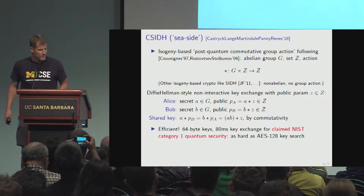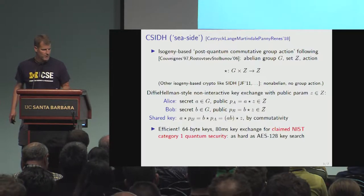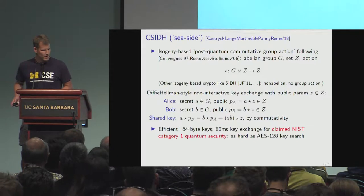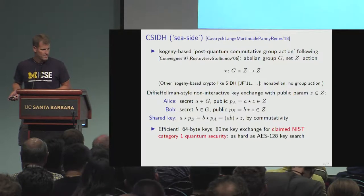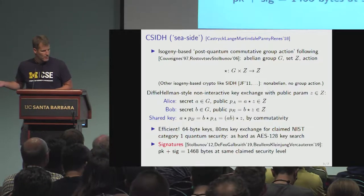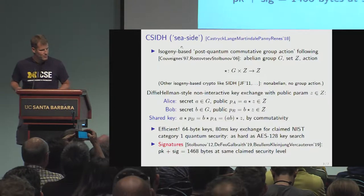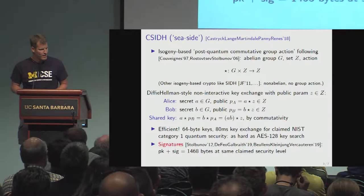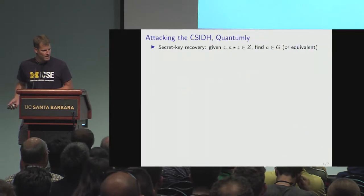What makes Seaside particularly attractive is its efficiency profile: small keys, pretty fast key exchange, for parameters that were claimed to have NIST Category 1 security, which is that it should be as hard as AES key search to break — that's 2 to the 170 divided by max depth logical quantum gates. There are also signature proposals which have attractive communication.